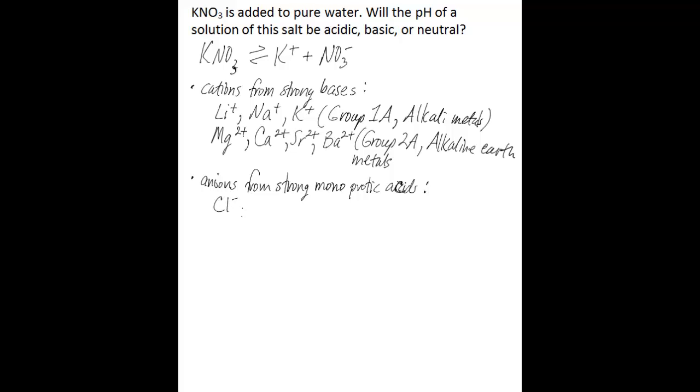You have chloride, bromide, and iodide anions. These are all from Group 7A, or the halogen elements, excluding fluoride. Other polyatomic anions included here are nitrate and ClO₄⁻ (perchlorate). These are anions that come from strong monoprotic acids.